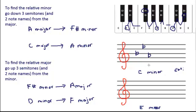Let's try E minor. We start on E and go up three semitones and two note names, and we end up on G. That means the relative major of E minor is G major. Using our major key signatures, we know G major has one sharp. So if we write in that one sharp, we now have the key signature for E minor.